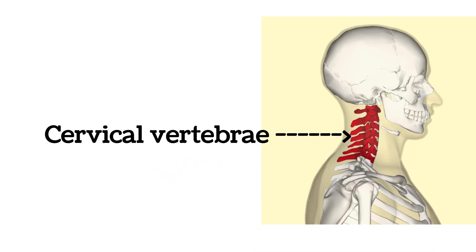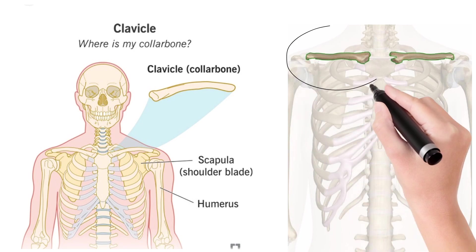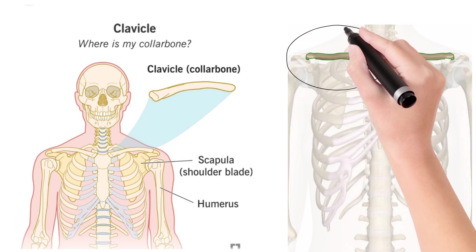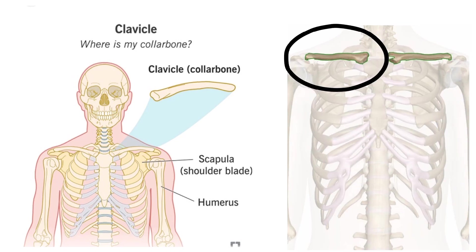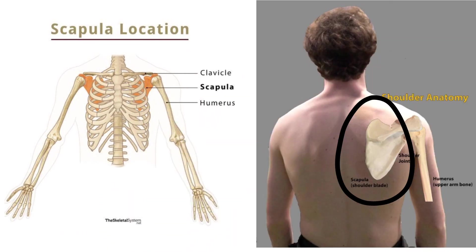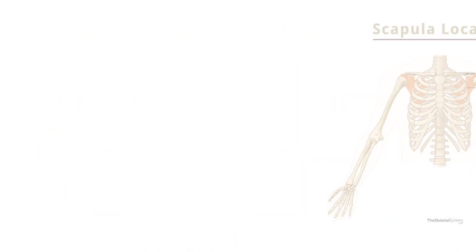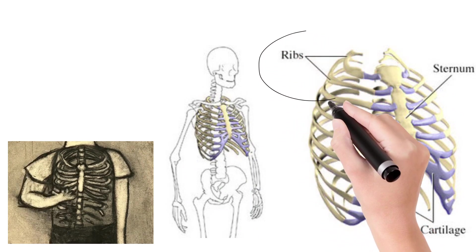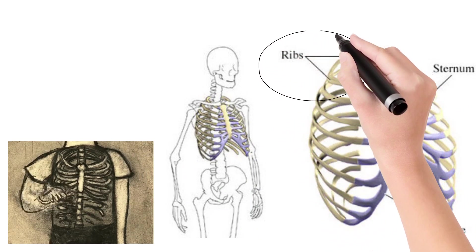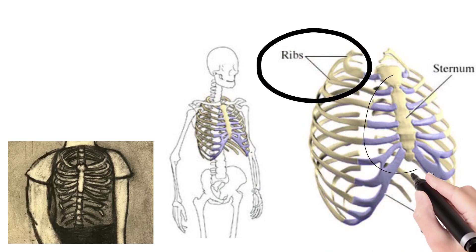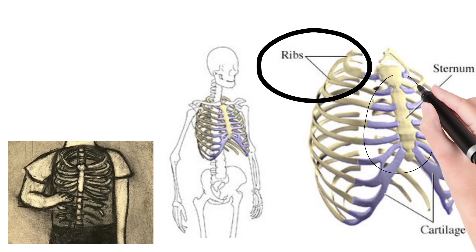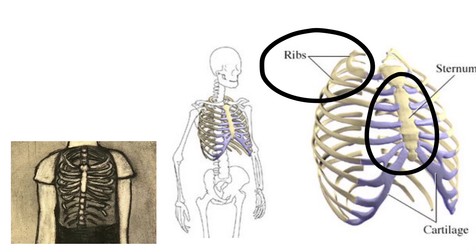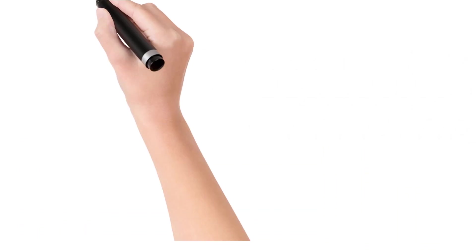In the shoulder region there is a bone called the clavicle, which is also called the collar bone, and the scapula, which is also called the shoulder blade. In the thoracic region there will be ribs — there will be 12 pairs of ribs — and there will be a middle bone called the sternum which supports the ribs.